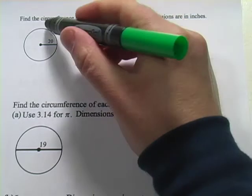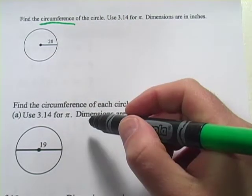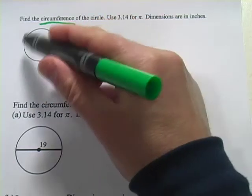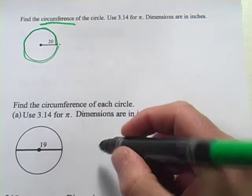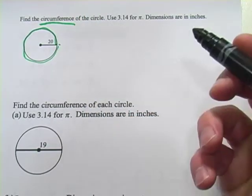In these problems, we're working on finding the circumference of circles, and circumference is the distance around the outside. So if you started right here and walked all the way around the circle, how far would you have walked? That's the circumference.